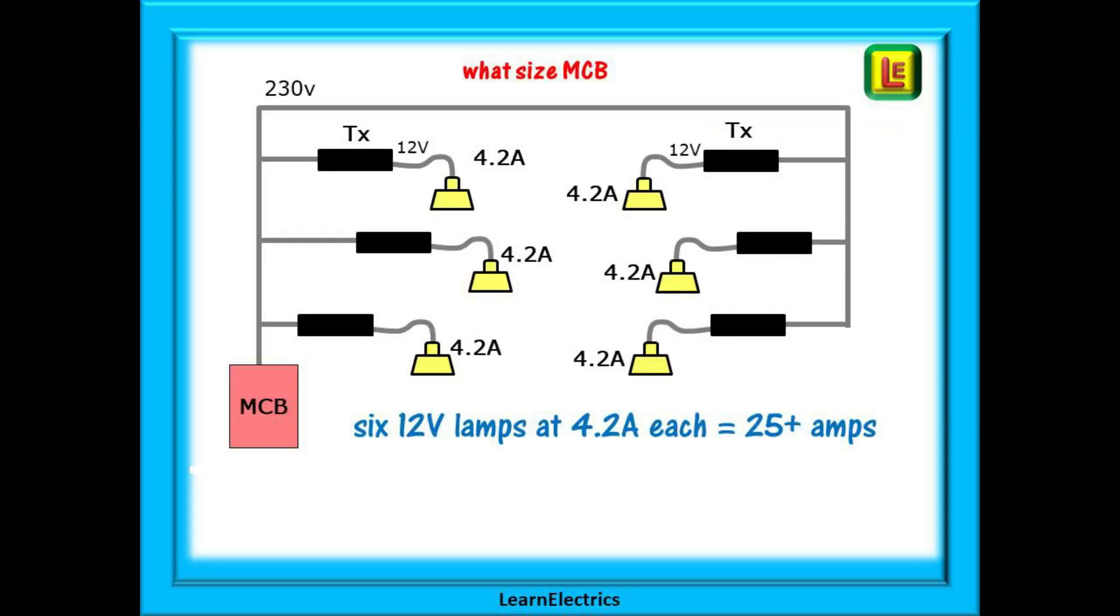Here is a simplified sketch of what they have asked about. A 230-volt supply looped to each of the six lighting transformers, one for each luminaire. The output is 12 volts, and at 50 watts, this means that each luminaire draws 4.2 amps.